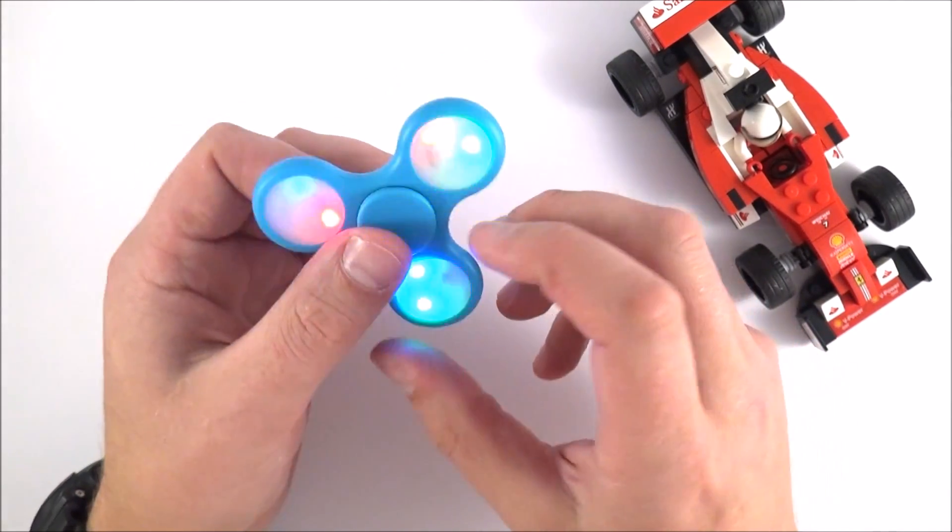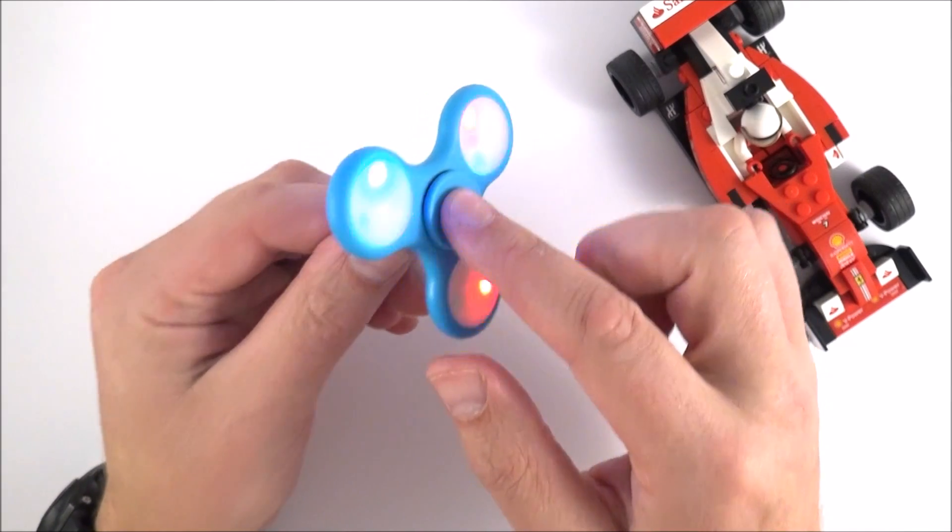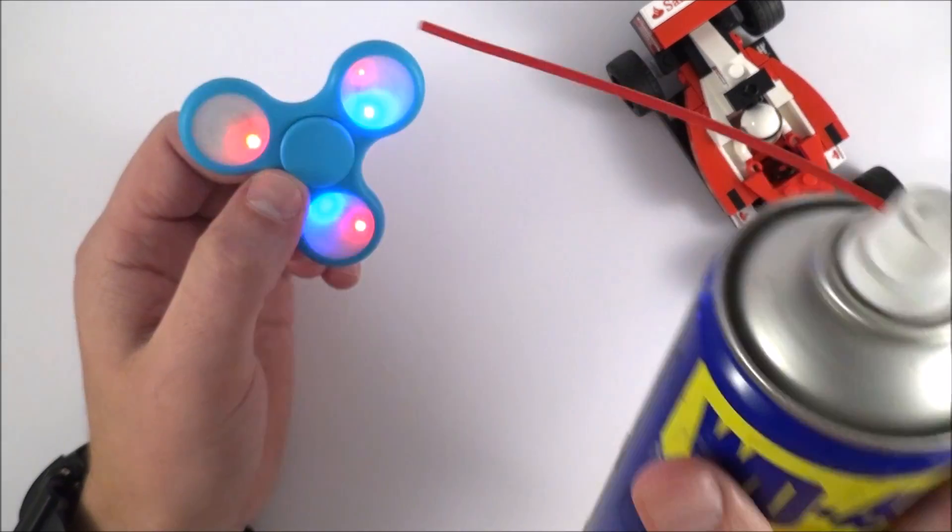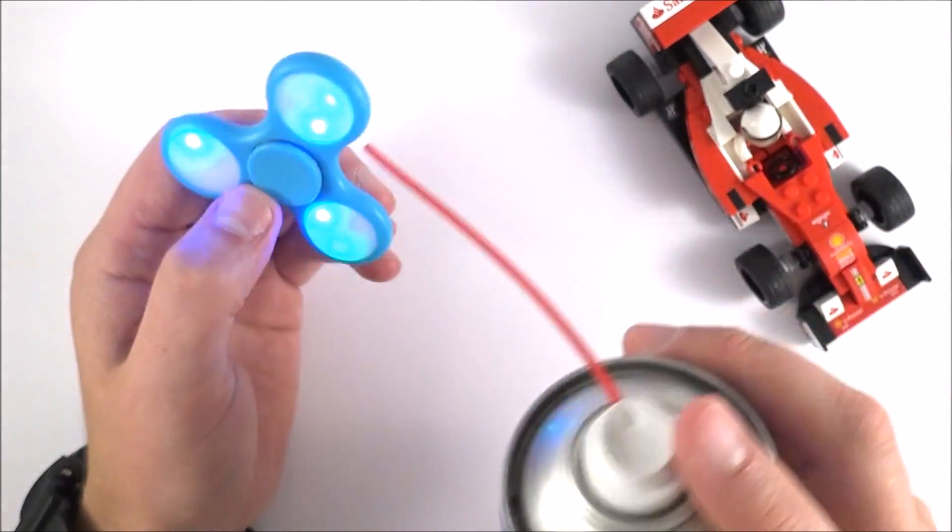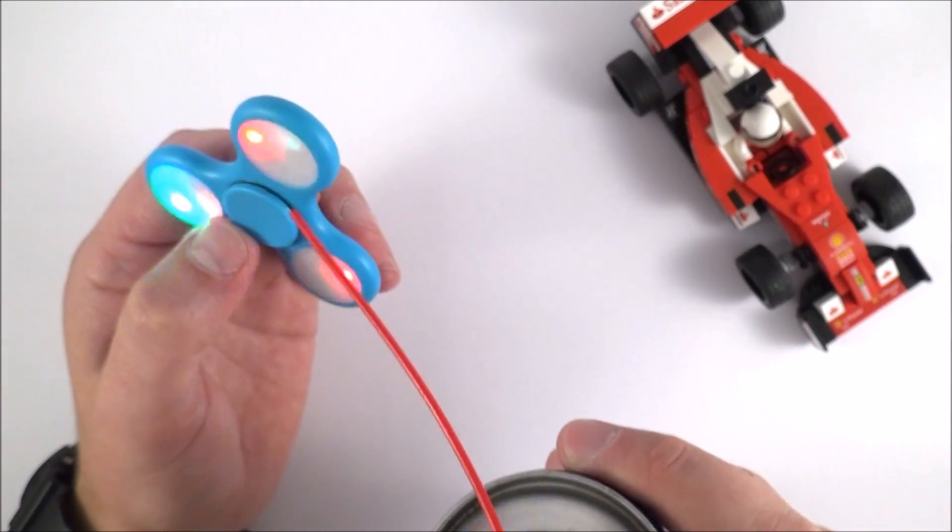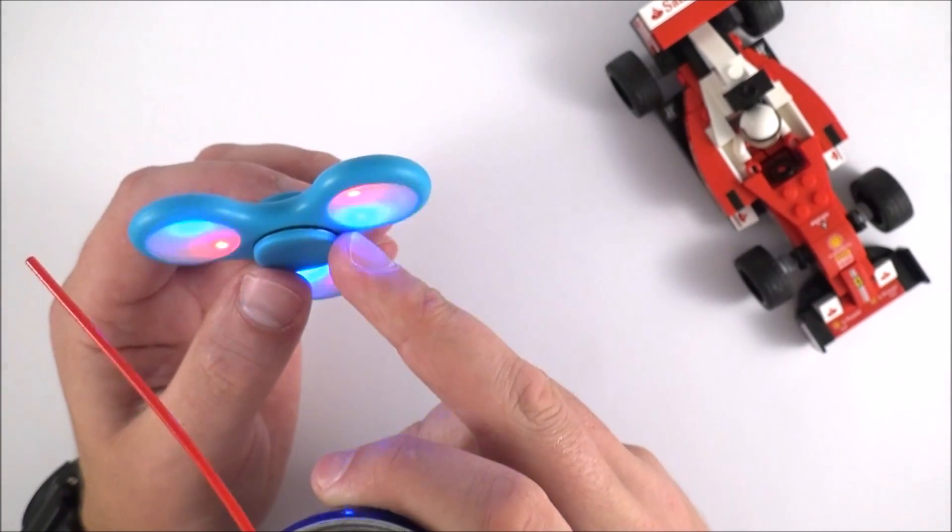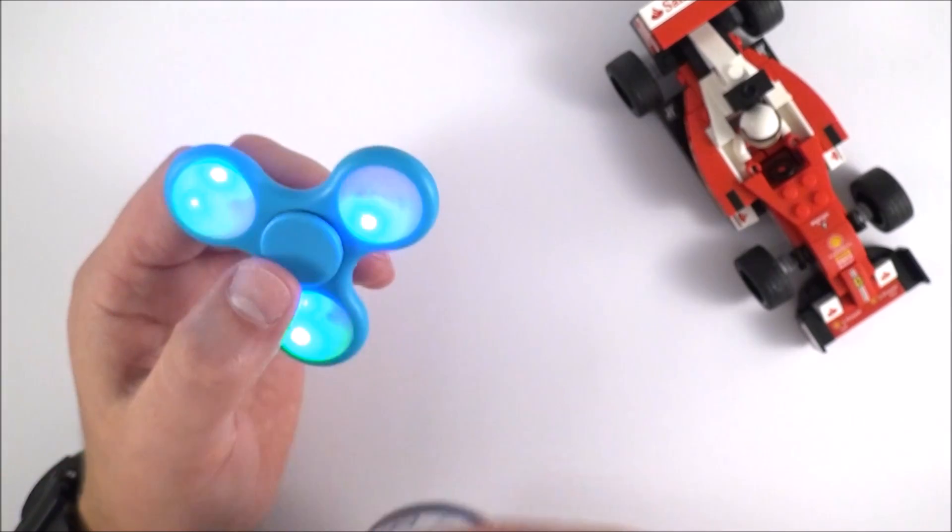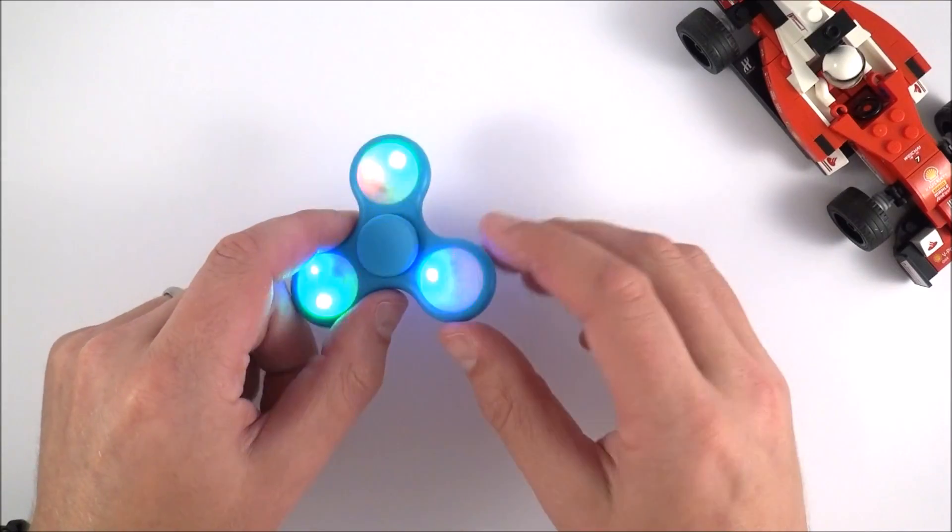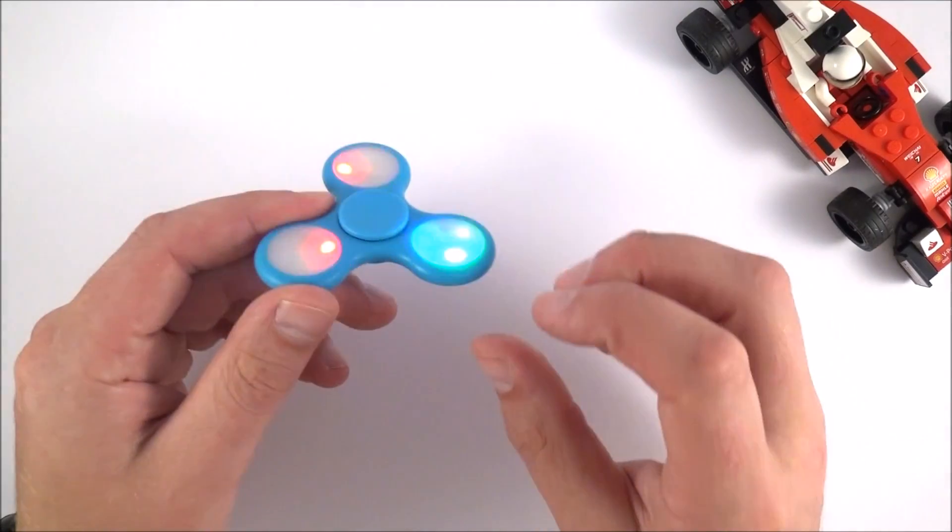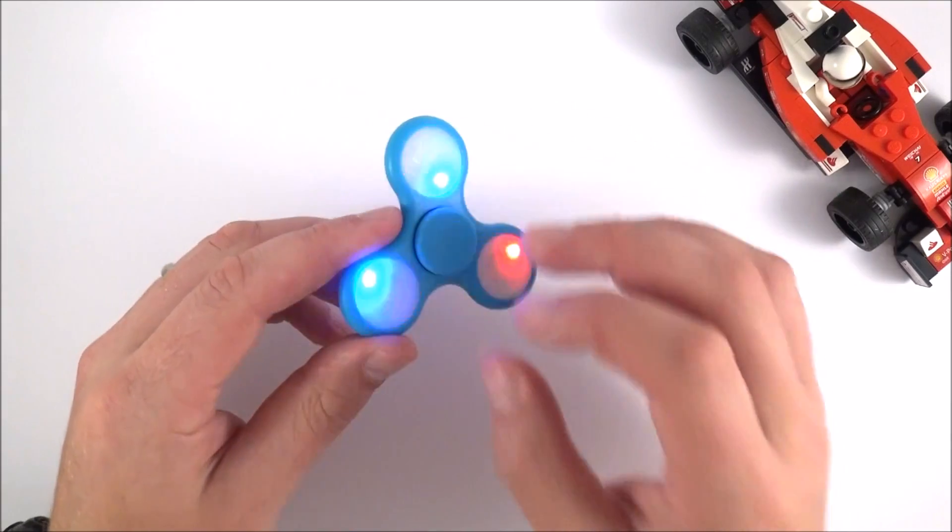The first thing to do is to reduce any friction in the bearing and often we can do that with something like this, some kind of lubricant, and all we need to do is squirt a small amount in and that's going to reduce the frictional torque which is slowing something down. But apart from reducing friction what else can we do? Well it's about the design of the actual fidget spinner itself.